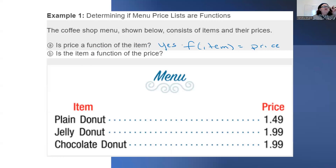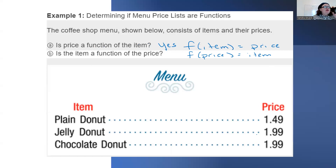Now they want us to flip it: is the item a function of the price? We're looking at price to ensure it only has one item. $1.49 just goes to plain donut — fine. But $1.99 goes to both jelly and chocolate donuts. So no, the function of price equals item is not a function.